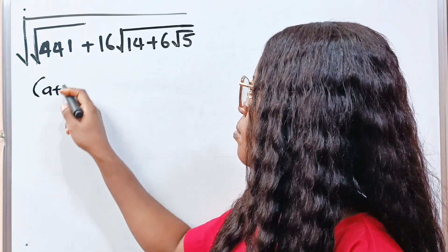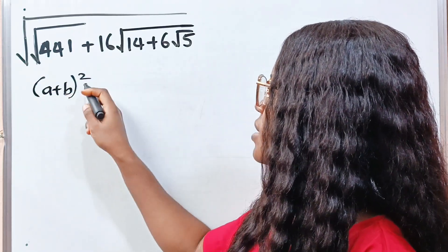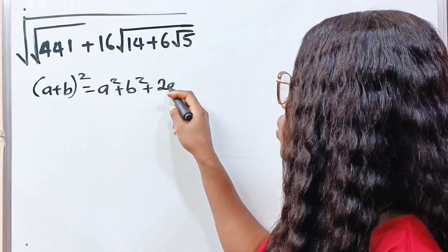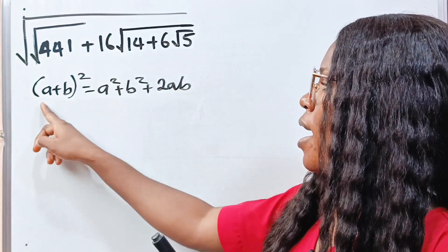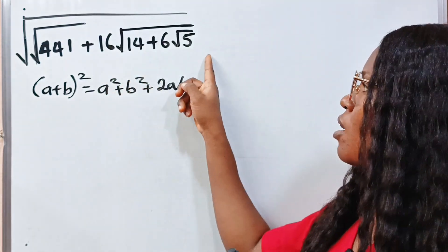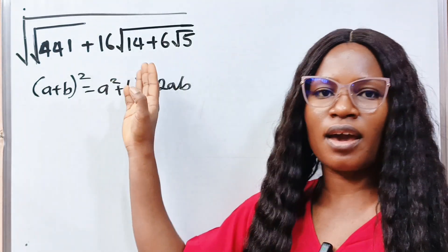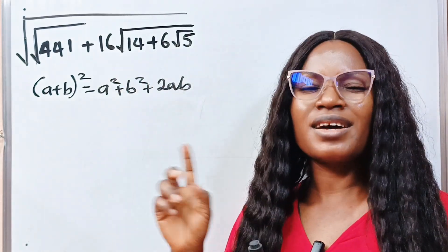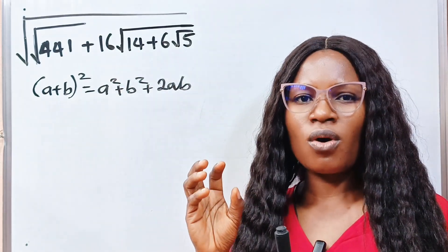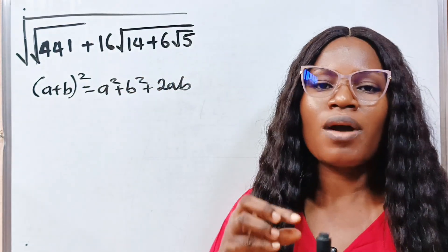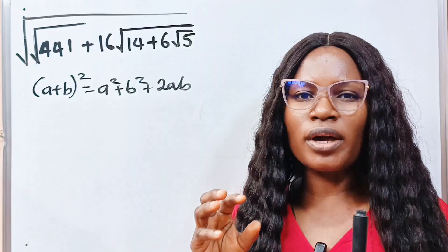which is a squared plus b squared plus 2ab, or a minus b squared, which is a squared plus b squared minus 2ab, from whatever I have here. And we always start solving from the outermost part. That is one thing you need to check out for. Another thing is, look out for any number that is not in its simplest form and simplify it.